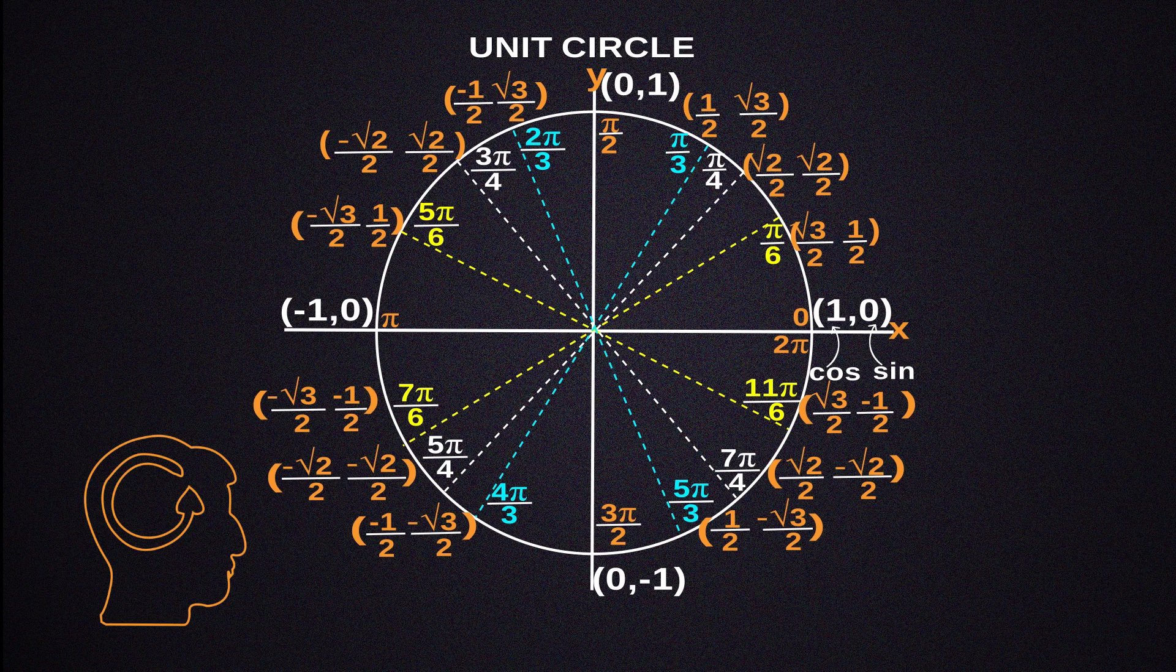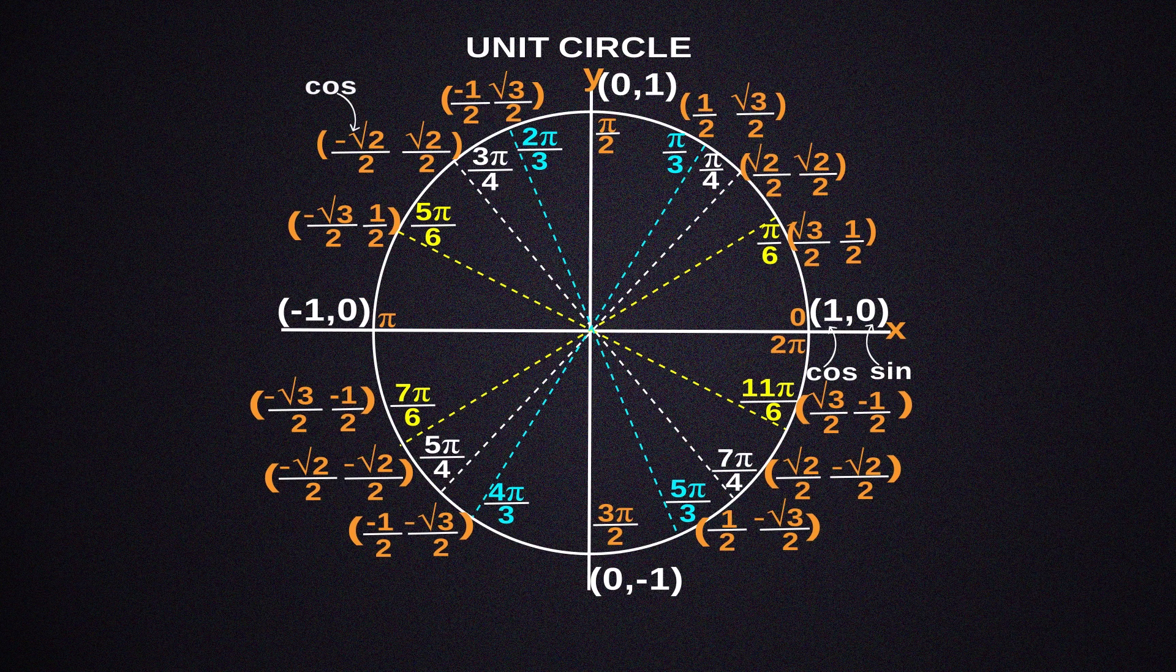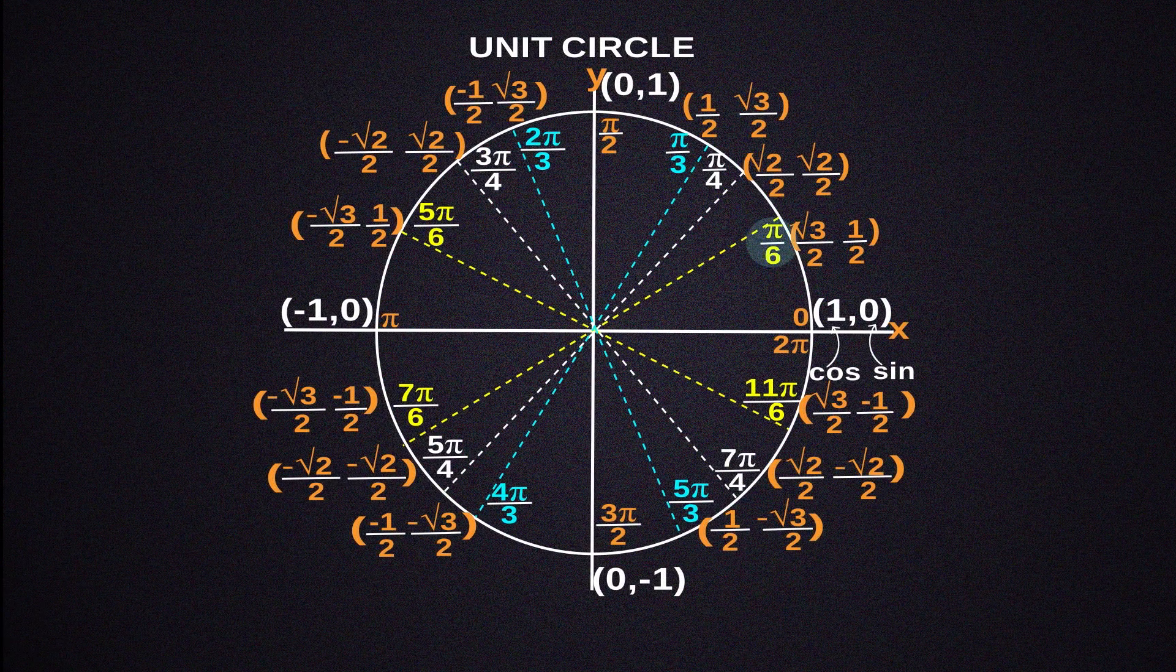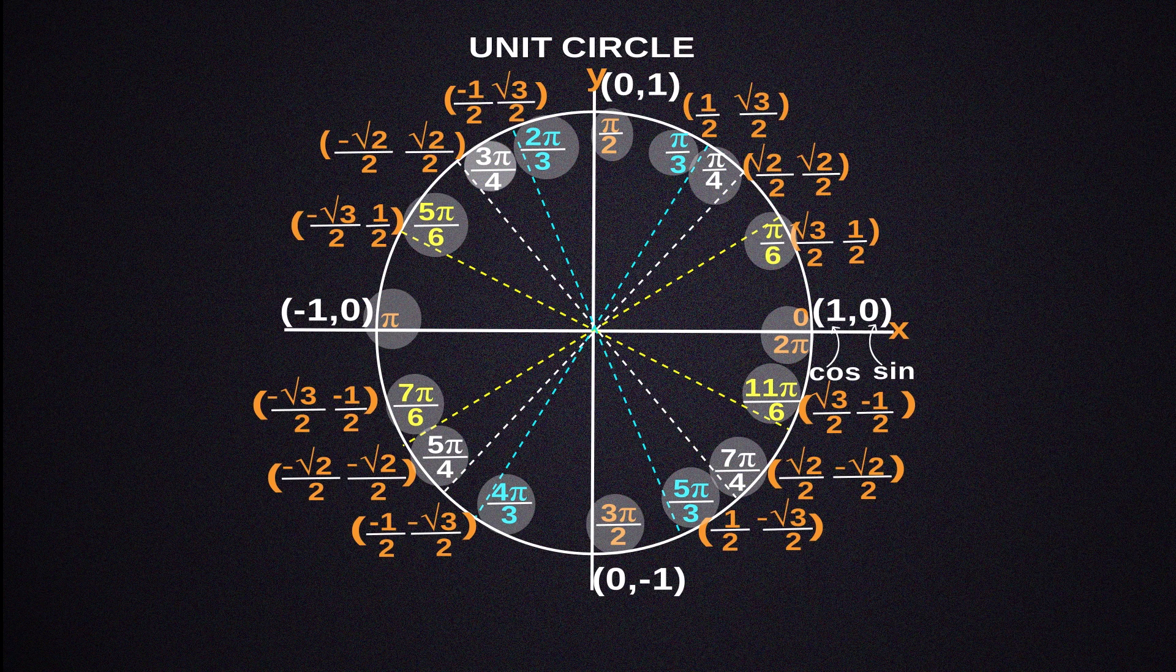Just to refresh your memory, the cos value is the first number in each of these locations and angles. The sine is the second number. These angles are in radians.